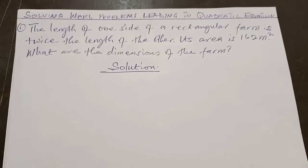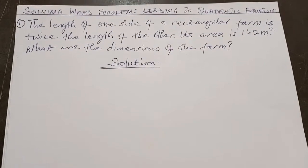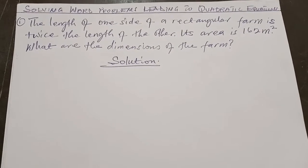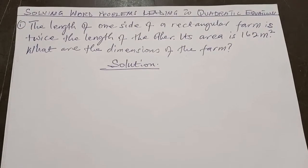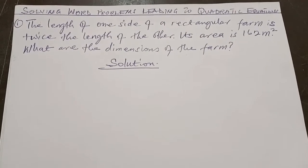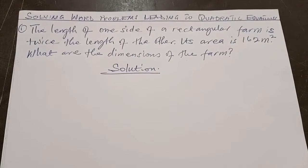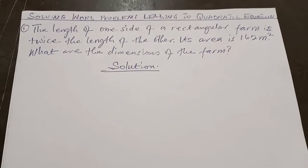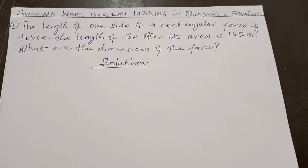The first question is: the length of one side of a rectangular farm is twice the length of the other. The area is 162 square meters. What are the dimensions of the farm? With questions that talk about diagrams, it will be more appropriate to sketch the diagram so that you can visualize whatever you are doing very well, then you can use that to do your calculation. So let me sketch the rectangular farm right now.